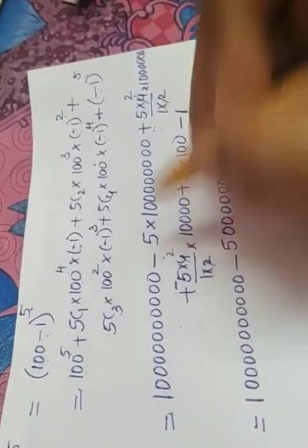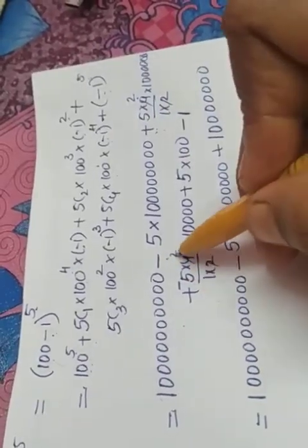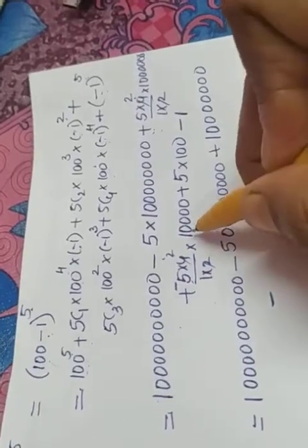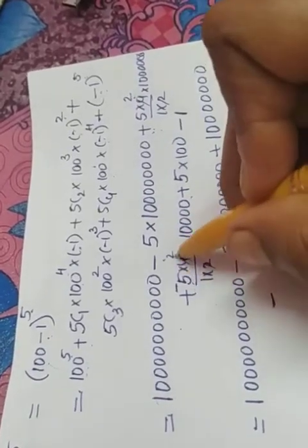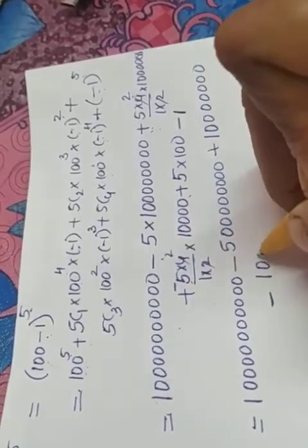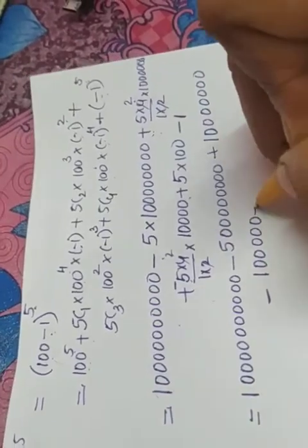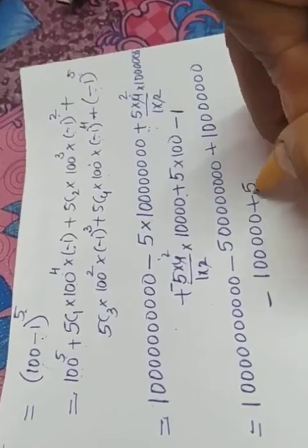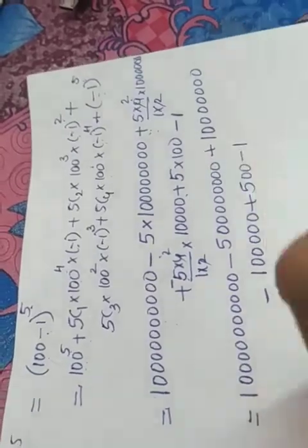Here, 2 and 4 get cancelled giving you 2. Again, 5 into 2 is 10. So it is negative. Already 4 zeros are there into 1 more zero. So, 1 and 5 zeros. Plus this value is 5 into 100 is 500 minus 1.